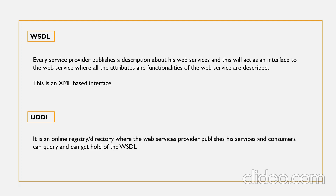You might wonder how the consumer gets to know about a WSDL. There are two ways: if the server and client know each other, they can directly exchange the WSDL. If they don't know each other, the web service provider publishes the web service on an online directory from where consumers can query and search for it. This online registry or directory is called UDDI — Universal Description, Discovery and Integration. It is an online directory where the provider can publish the WSDL and consumers can query and retrieve it to call the web service.